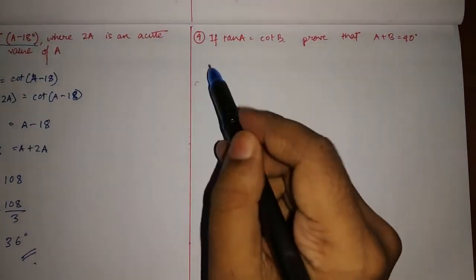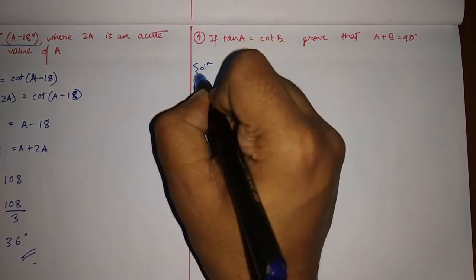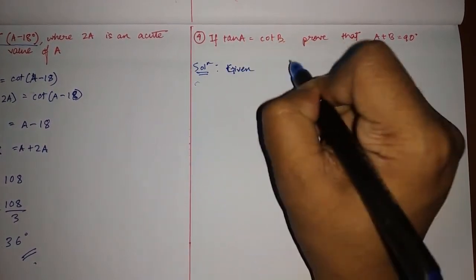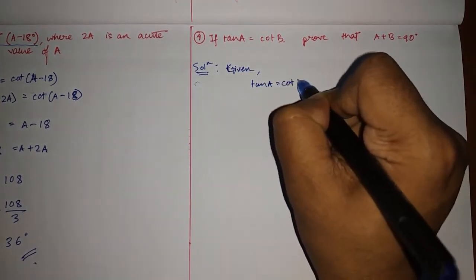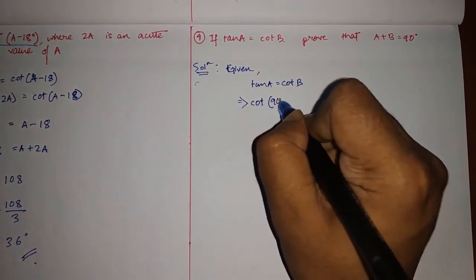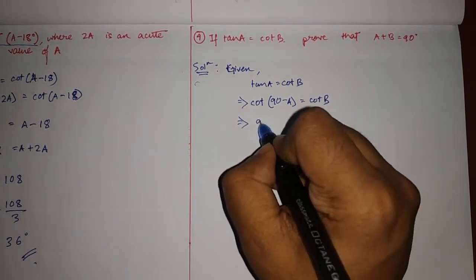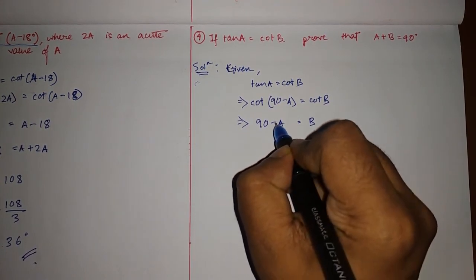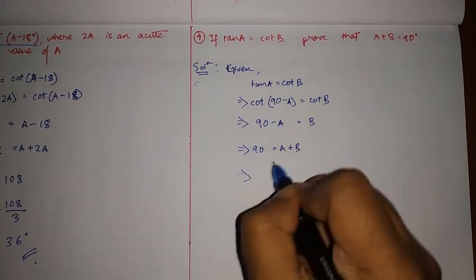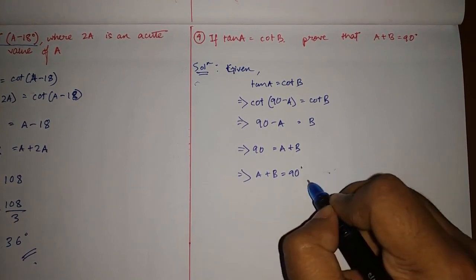Let's do the fourth one: if tan a = cot b, prove that a + b = 90°. Convert tan a into cot using the formula: cot(90° − a) = cot b. Remove cot from both sides: 90° − a = b. Transfer −a to the right hand side: 90° = a + b. Shuffle the equation and you have proven what was needed. Hence proved.